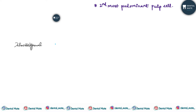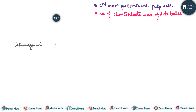Odontoblasts are the second most predominant pulpal cell. The number of odontoblasts is equal to the number of dentinal tubules. These are located adjacent to the predentine, with cell bodies in the pulp and cell processes present in the dentinal tubules.